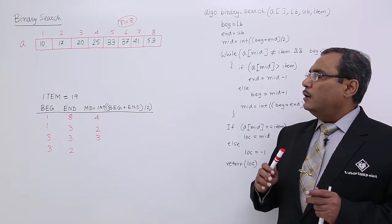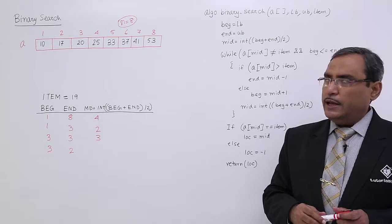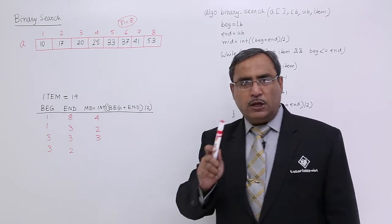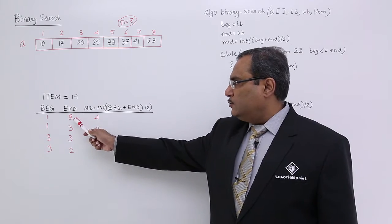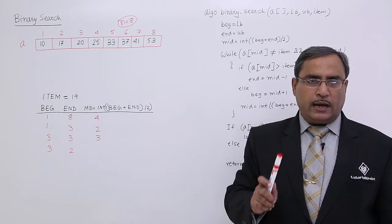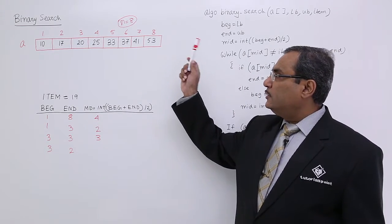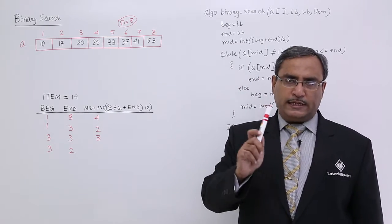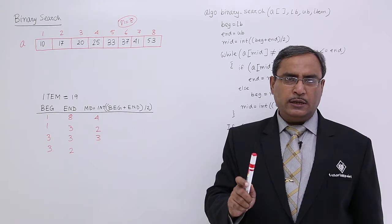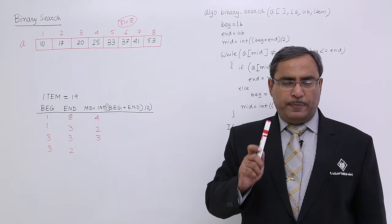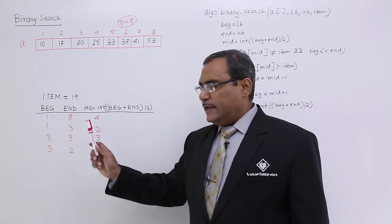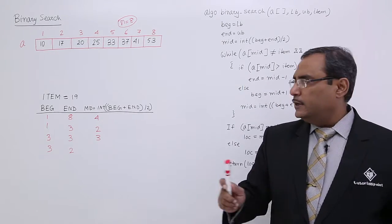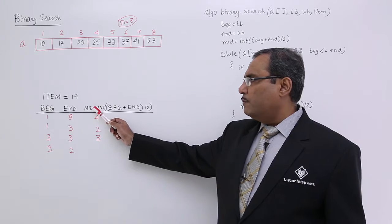Now, how will this binary search algorithm work? At first, I shall make beg equal to 1, that is the lower bound, and n equal to 8, that is the upper bound. I shall calculate the mid position. The expression to calculate the mid position is: integer of (beg + n) divided by 2. So, 1 plus 8 is 9, divided by 2 is 4.5, integer of that is 4. So I shall be getting 4 for mid.